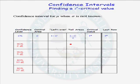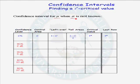In this lesson, we will be finding our t-critical values for a t-confidence interval. When do we use a t-confidence interval? We use a t-confidence interval when we are trying to estimate the population mean mu when the population standard deviation sigma is not known.